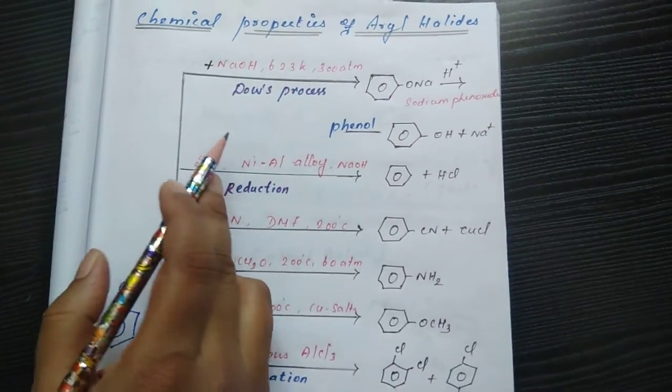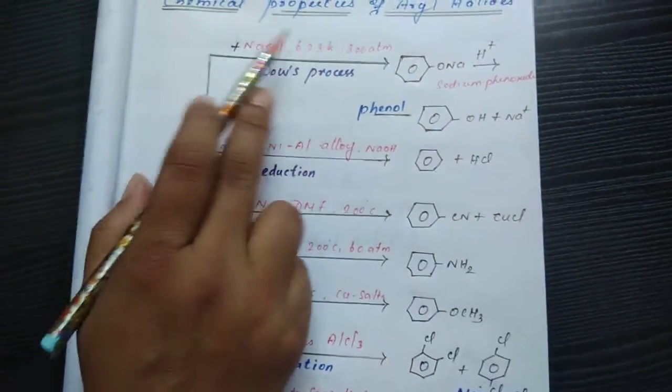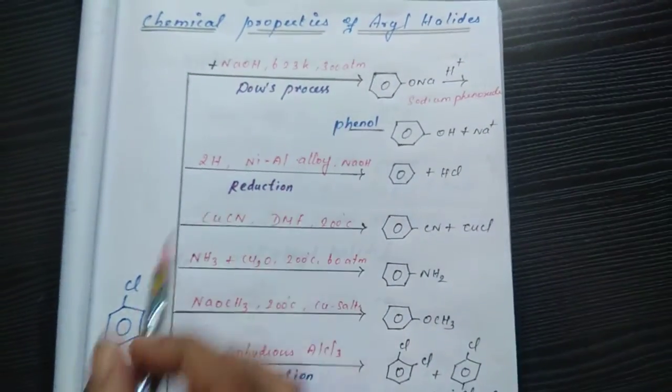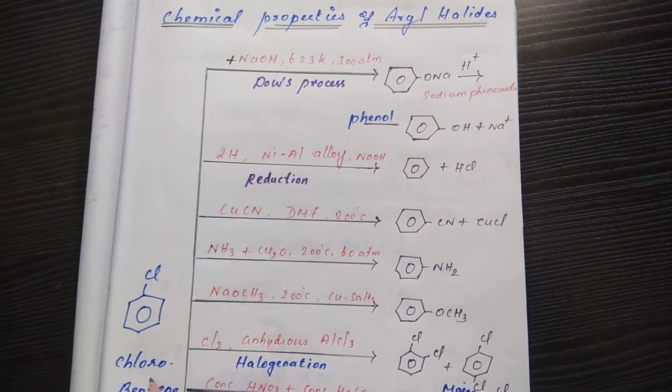Hi students, in this session we are going to see the chemical properties of aryl halides. Here I am choosing chlorobenzene as the substituent.